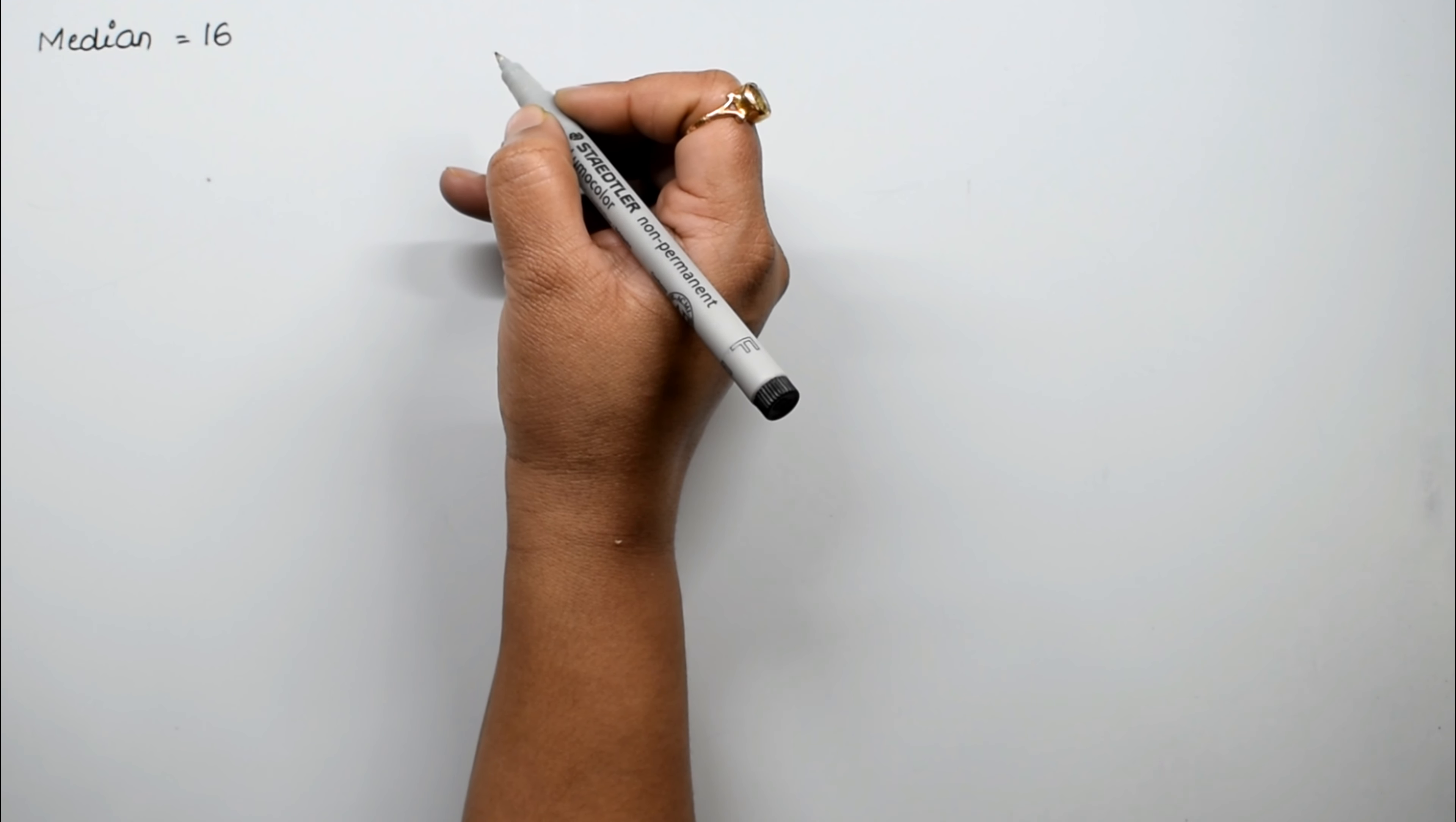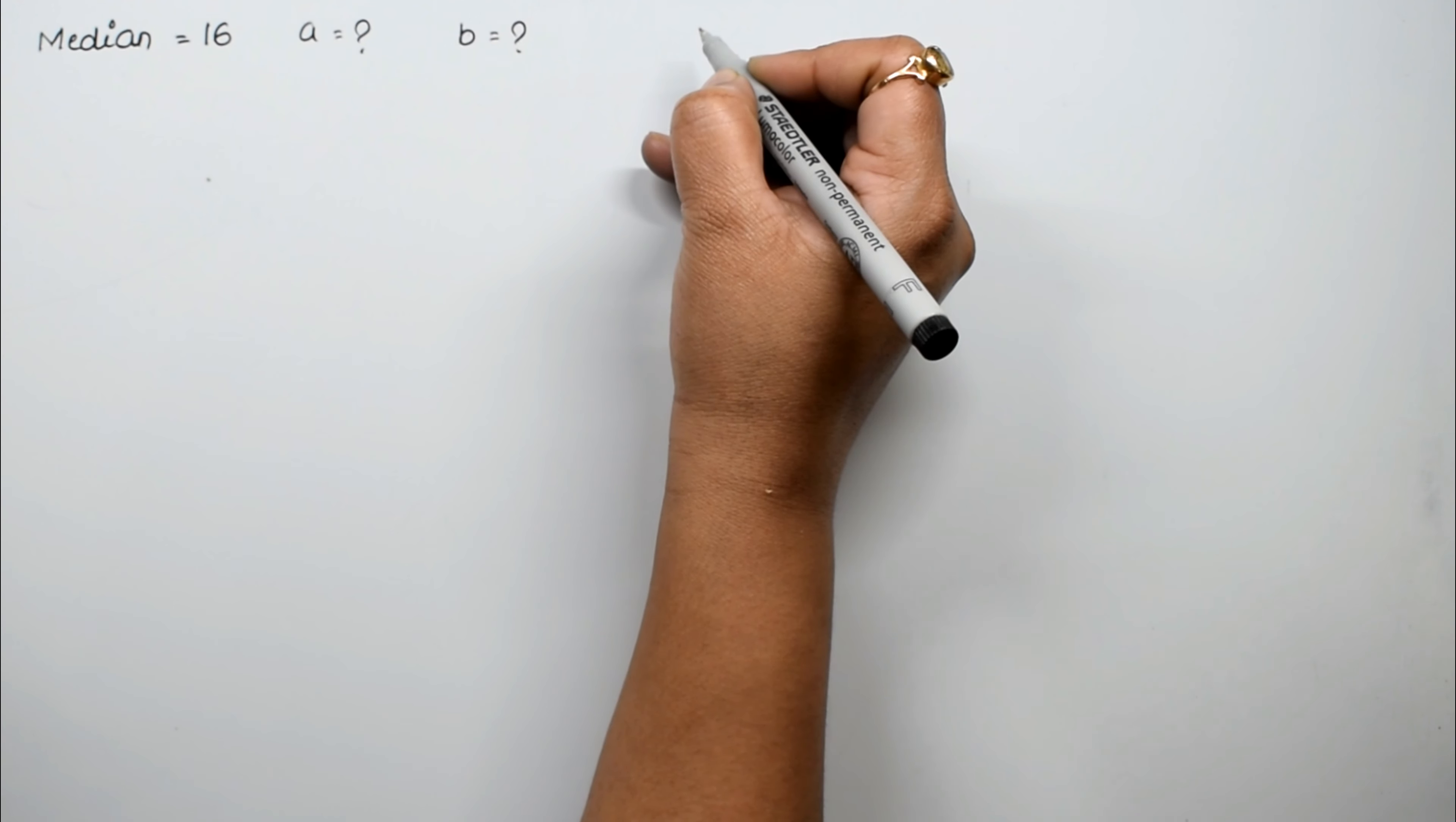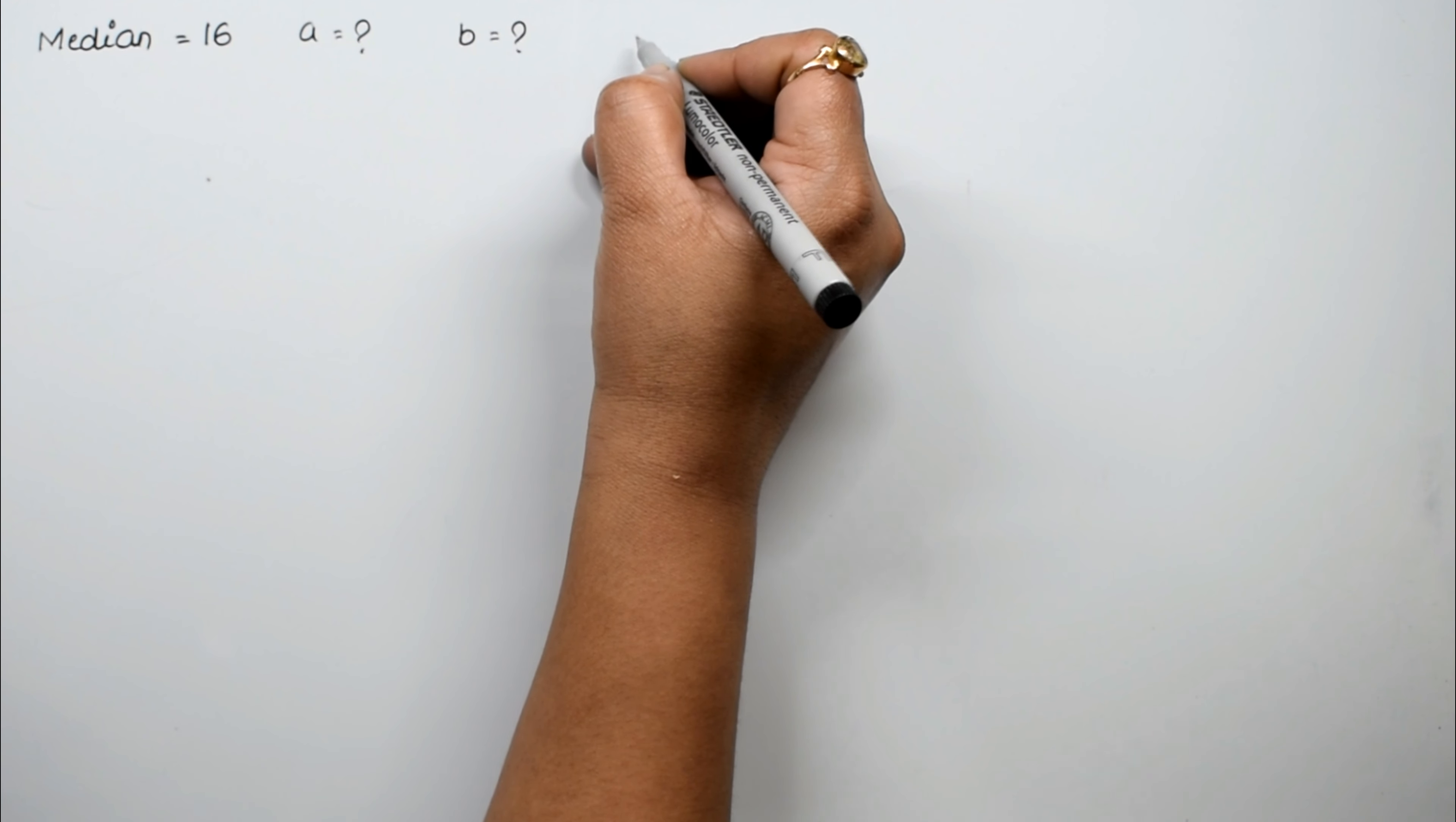The question asks to find the missing frequencies A and B. We don't know the values of A and B. The total frequency is given as 70.